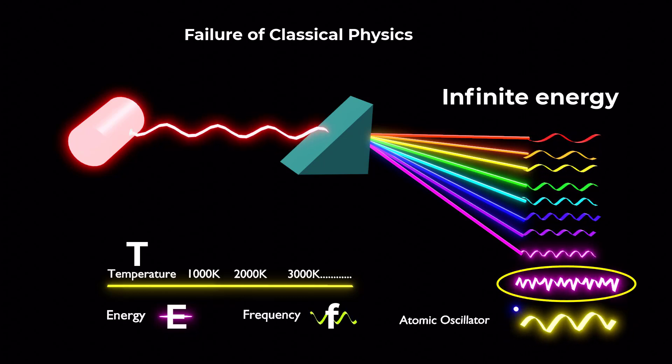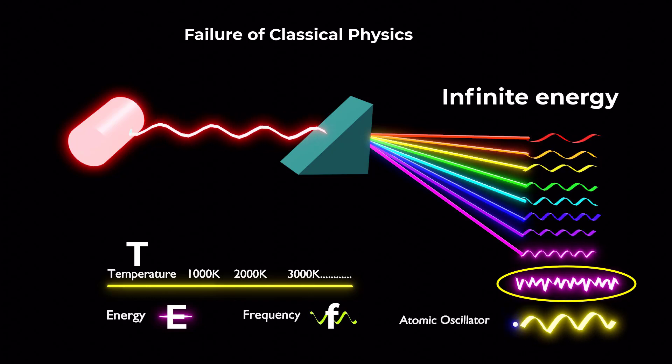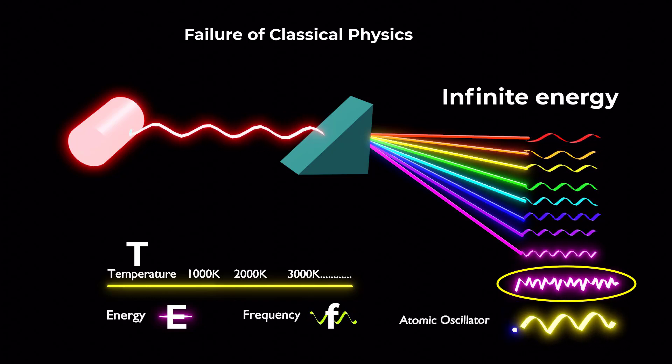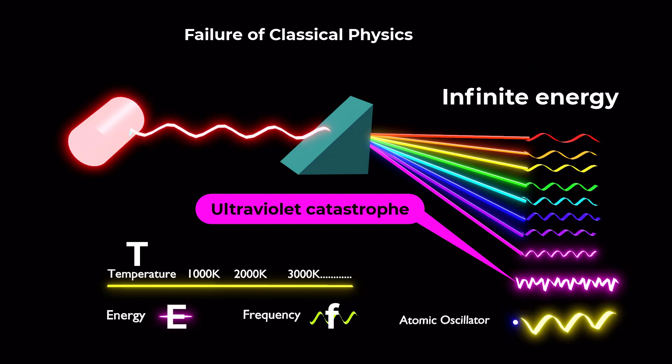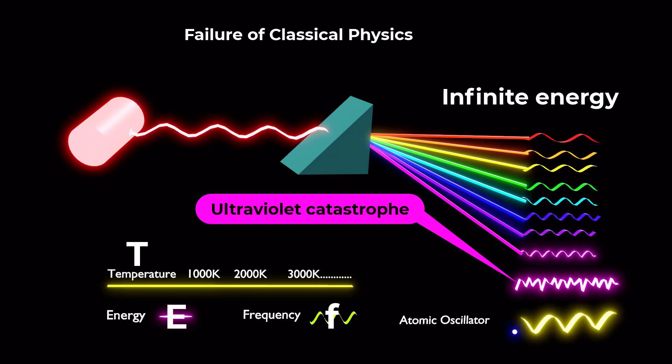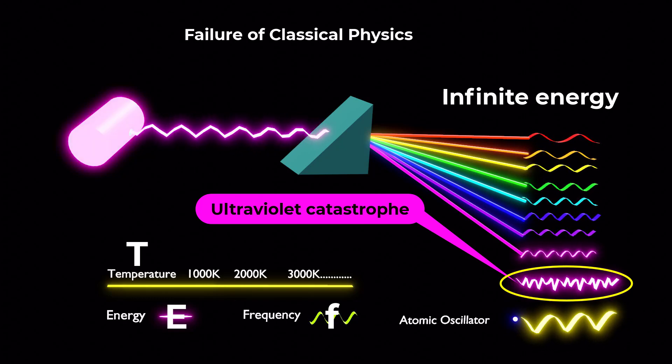However, these classical predictions clashed with experimental observations, leading to a major problem known as the ultraviolet catastrophe, where classical physics predicted an infinite energy output at shorter wavelengths.